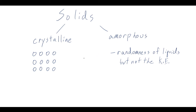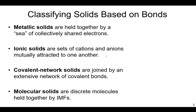We can break solids down further into different classes based on the types of chemical bonds — not just crystalline versus amorphous, which speaks to physical structure. There are four types on this slide and two more on the next. The first type is metallic solids.